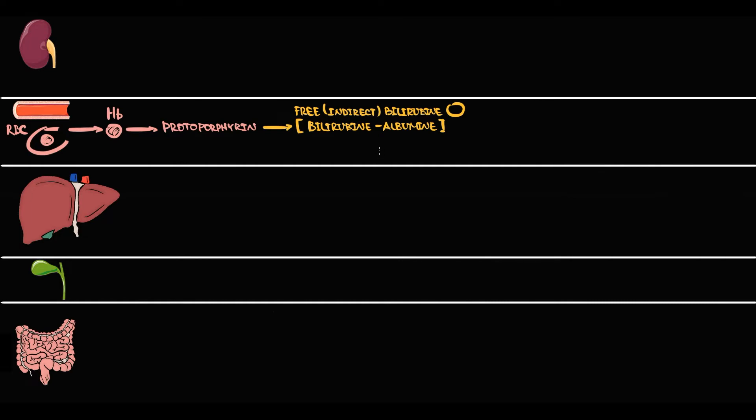In the form of albumin-bilirubin complex, bilirubin is delivered to the liver tissue, where hepatocytes take up bilirubin from the circulation. Hepatocytes, by glucuronidation, bind to free bilirubin a glucuronic acid. And the complex of bilirubin with glucuronic acid we call conjugated bilirubin or direct bilirubin.